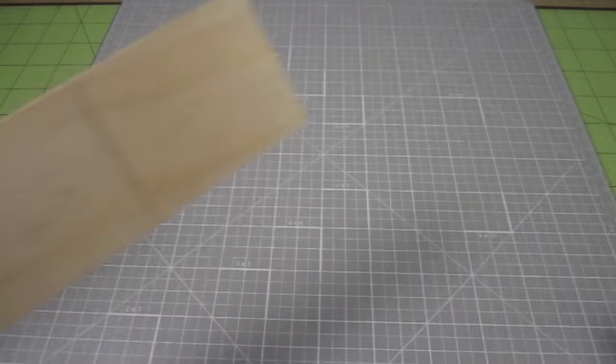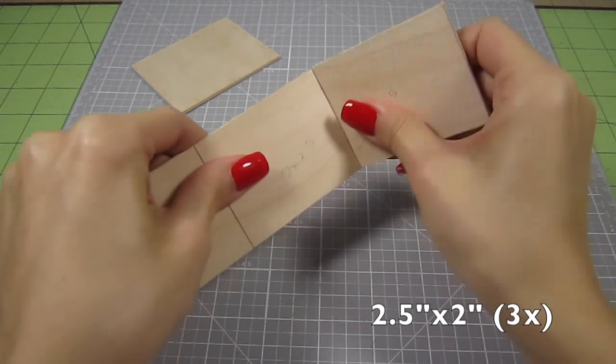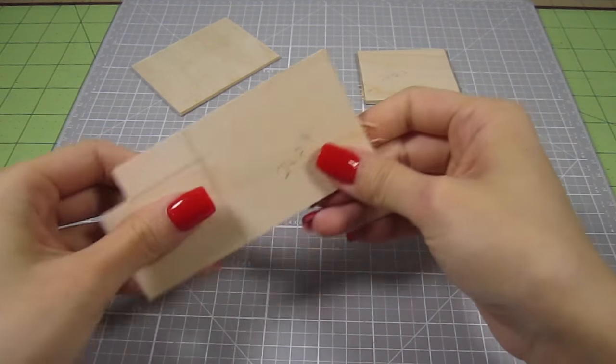Then I draw out 3 2 1⁄2 by 2 inch rectangles. Cut those out. Breaking this wood is so satisfying. Okay, let's assemble these pieces.